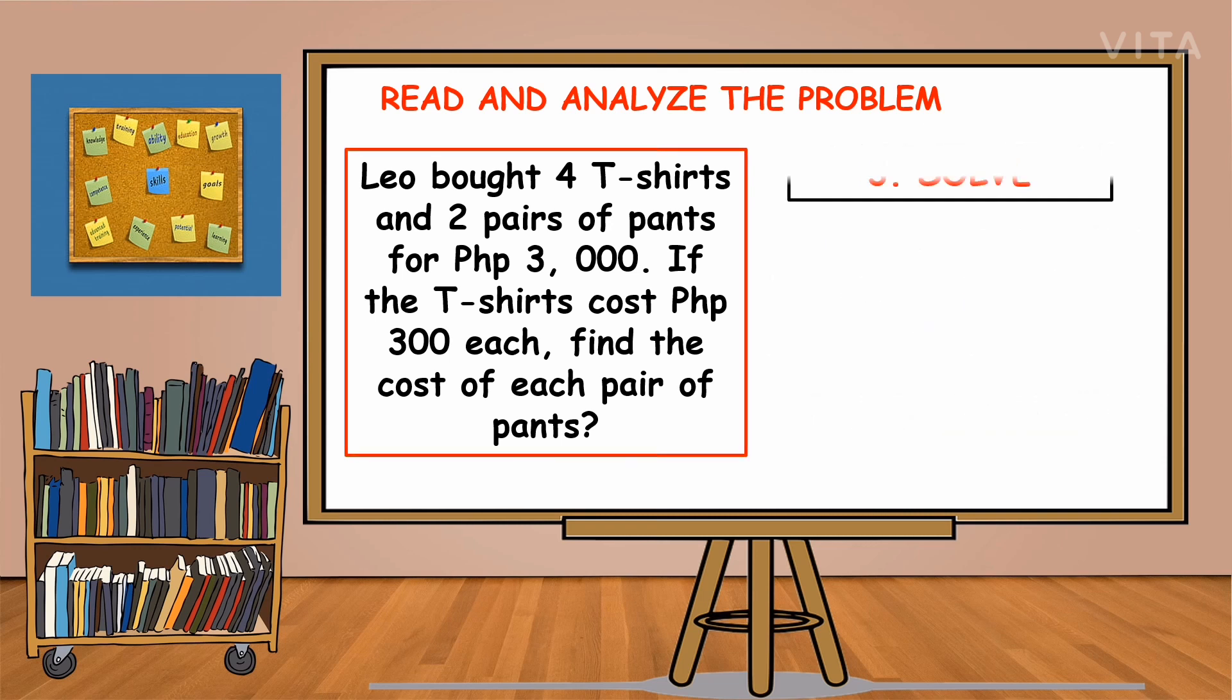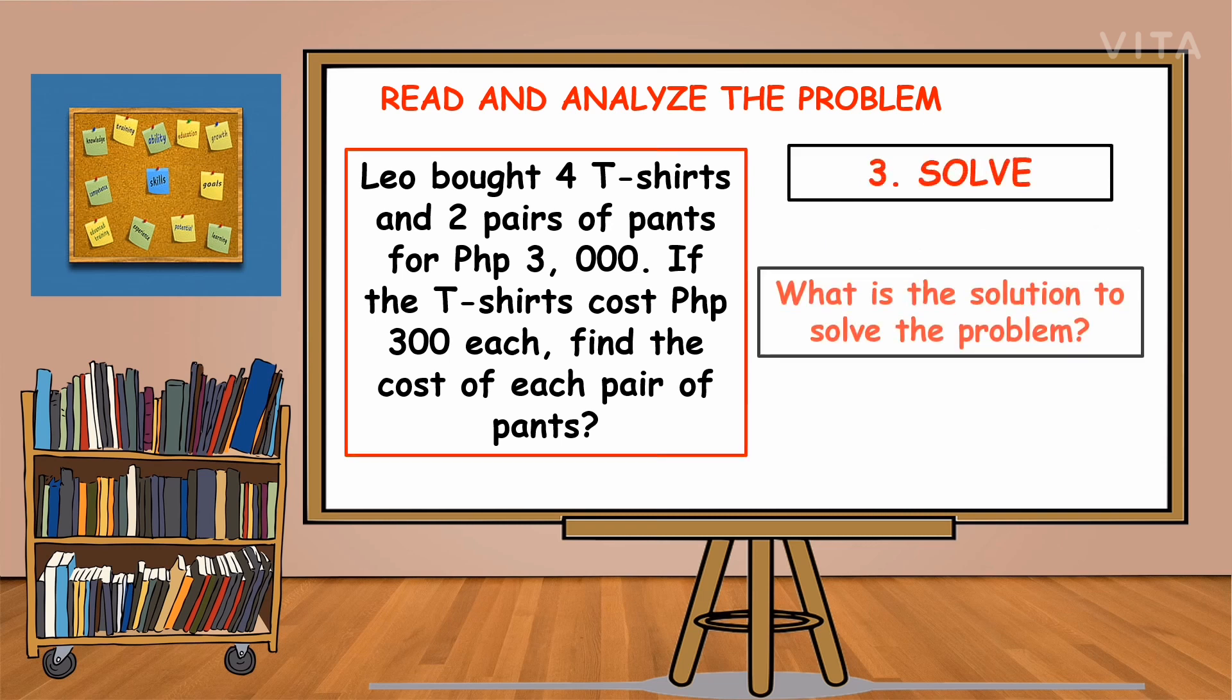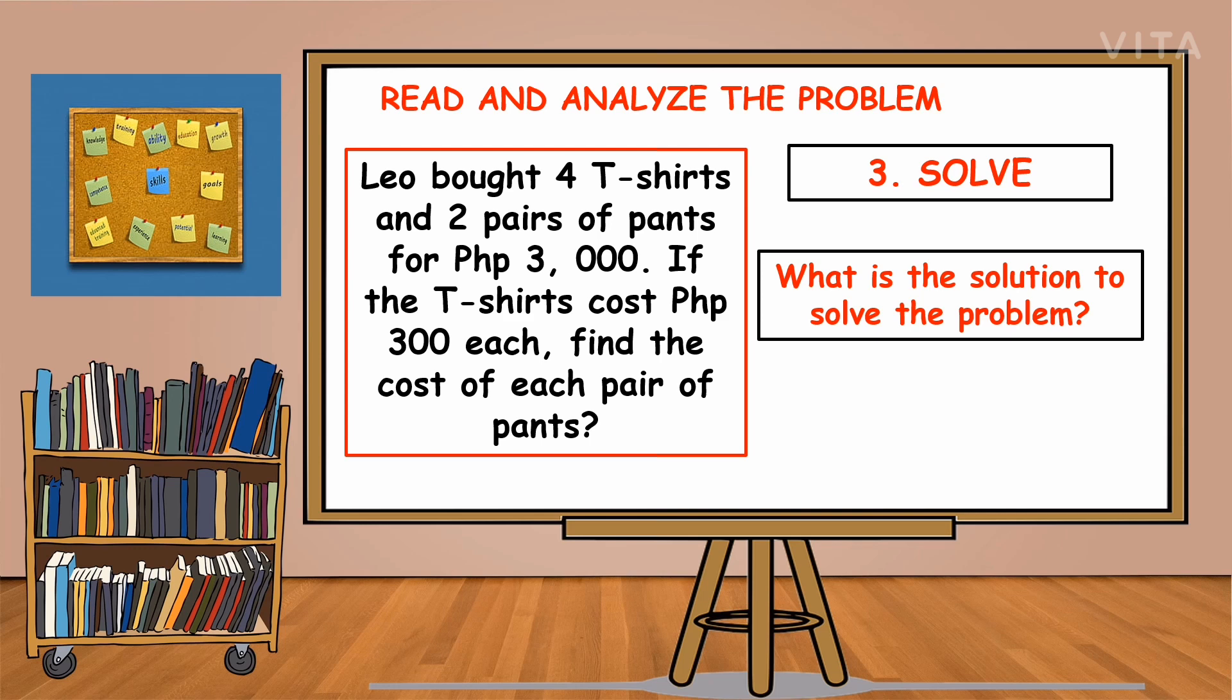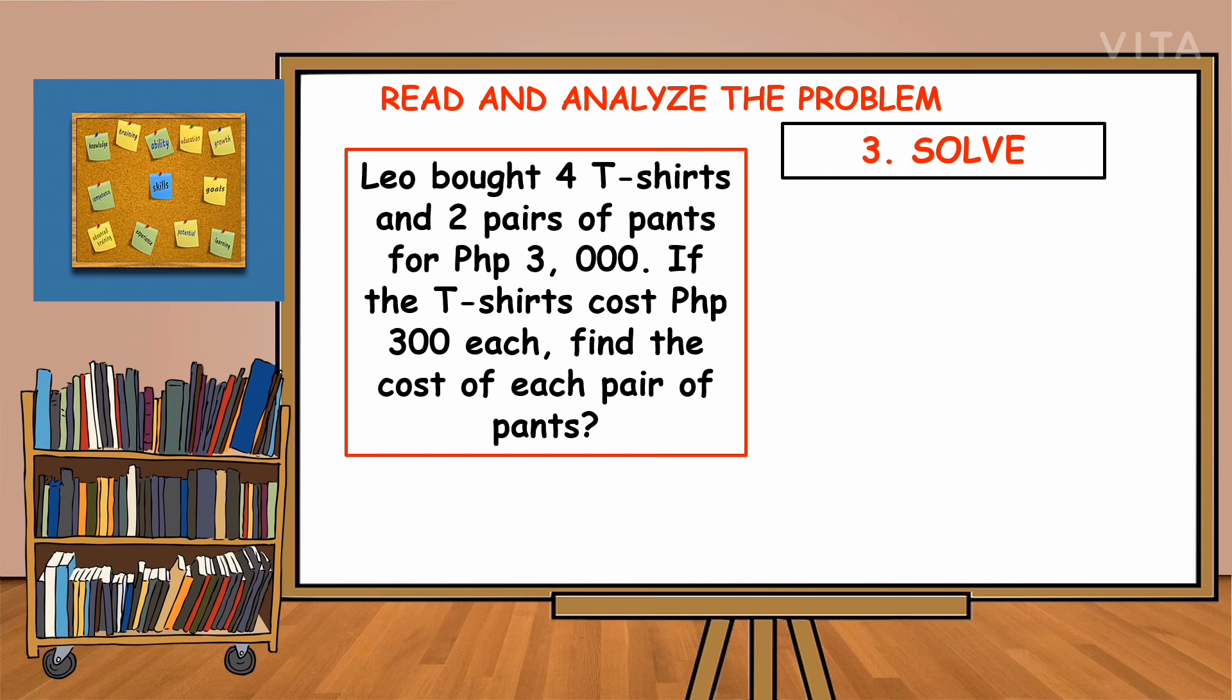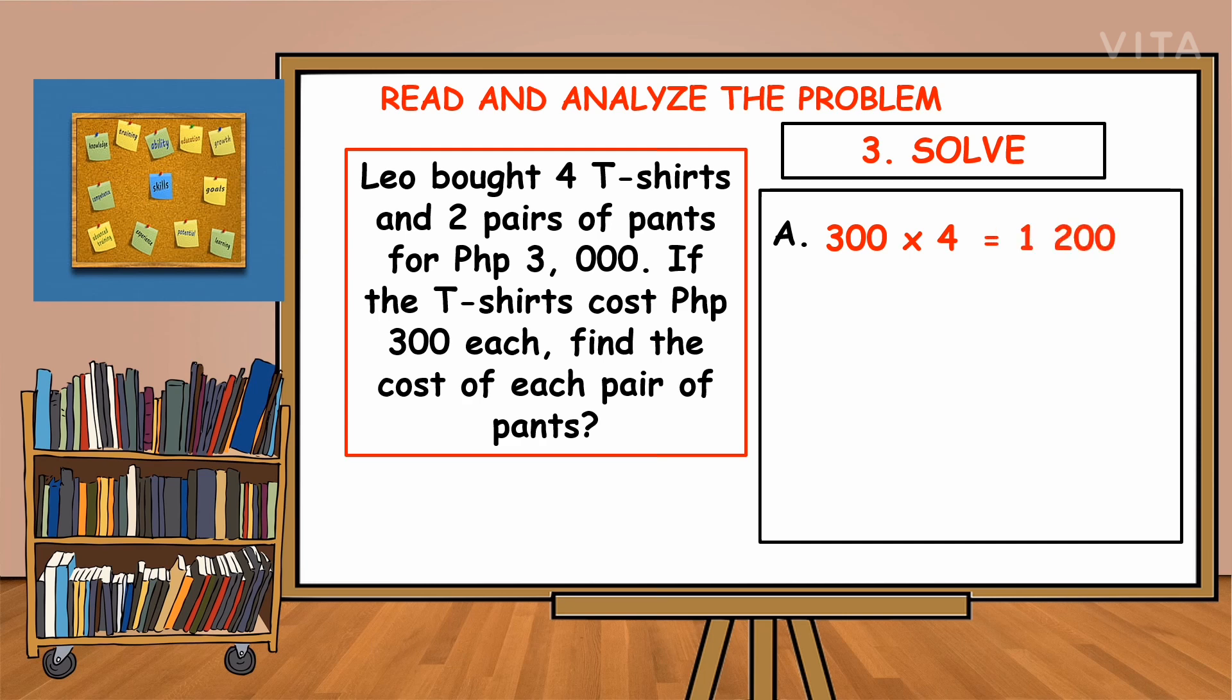The third step is to solve. We are looking for the solution to solve the problem. Let us solve the problem. We will perform multiplication first. 300 times 4—we multiply 300 by 4 because there are 4 t-shirts and one t-shirt costs 300 pesos. So 300 times 4 is 1,200.